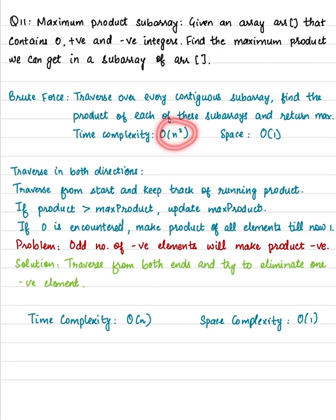A better solution will be traversing in both directions. Traverse from the start and keep track of the running product. If the product is greater than maximum product, update the maximum product.